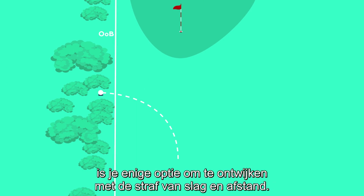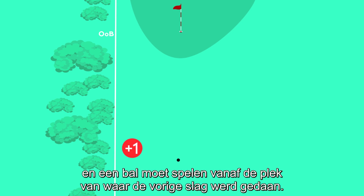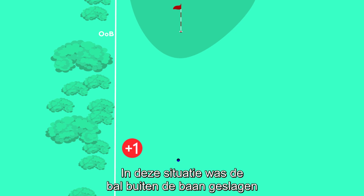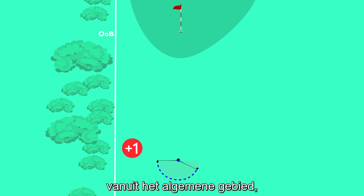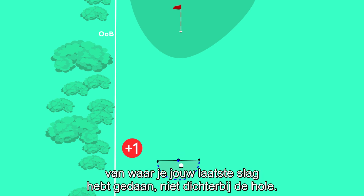Stroke and distance relief means you add one penalty stroke and play a ball from where the previous stroke was made. In this situation, the ball was hit out of bounds from the general area, so you must drop within a one club length relief area from where you played your last stroke, no nearer the hole.